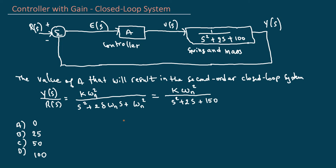Welcome back to another video. This is an example on control systems. You are given here a proportional controller with gain A using that to control a spring and mass system, as you can see here.